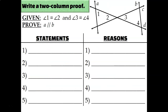Let's try another one. Write down your given: angle 1 and angle 2 are congruent, and angle 3 and angle 4 are congruent. Label the diagram — angle 1 and 2 with one arc each, and angle 3 and 4 with two arcs each since they're a different set. We're trying to prove that line A is parallel to line B, so I'm looking for corresponding, alternate interior, or alternate exterior angles to be congruent, or consecutive interior angles to be supplementary.